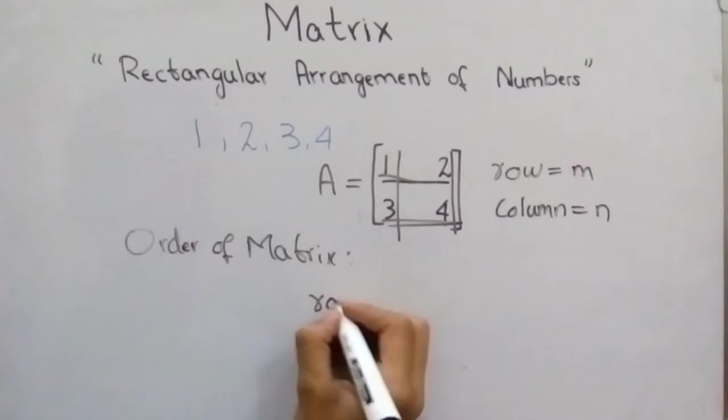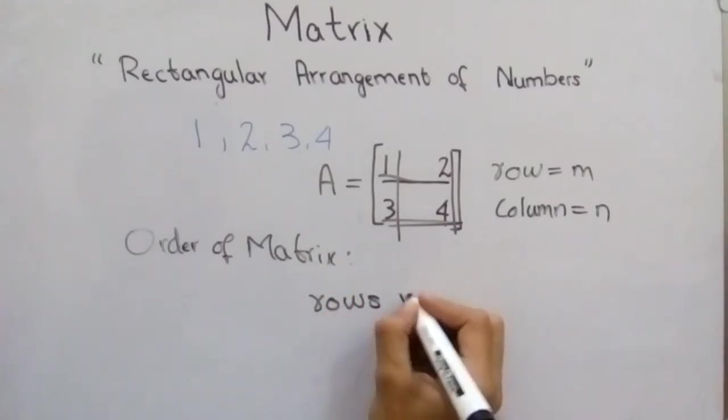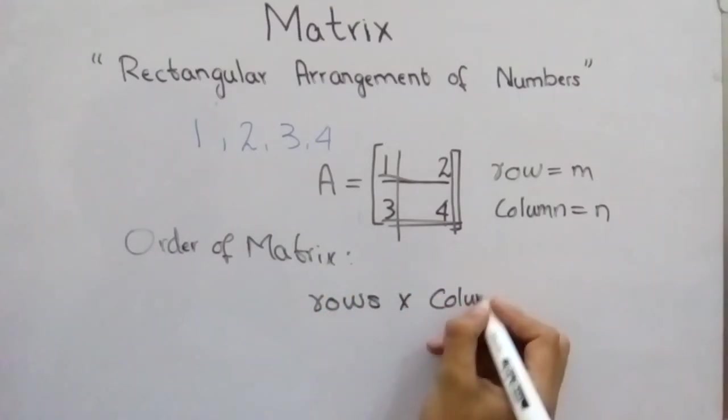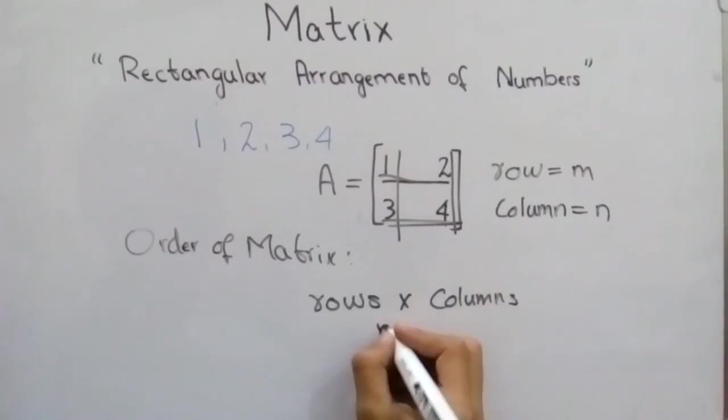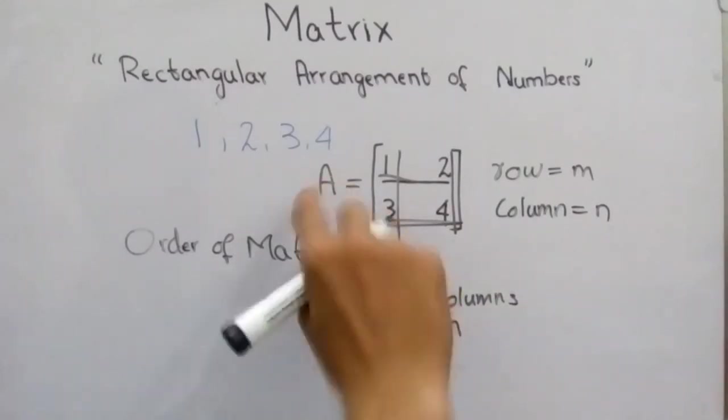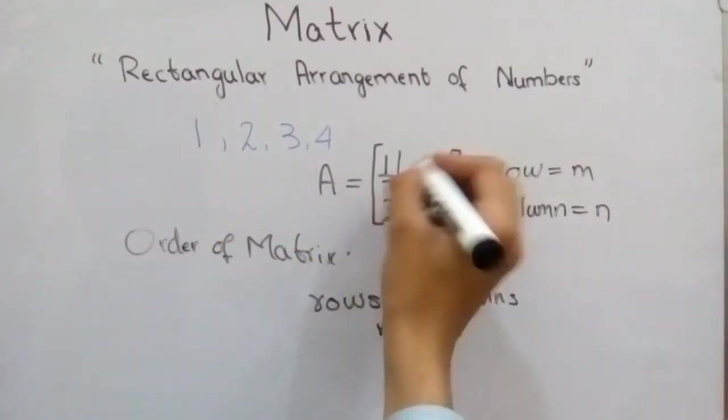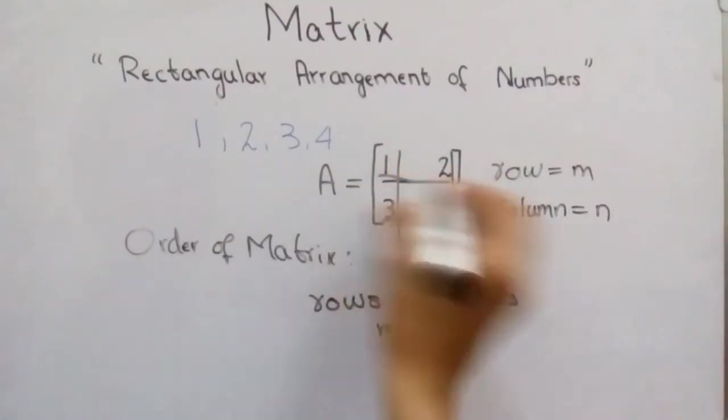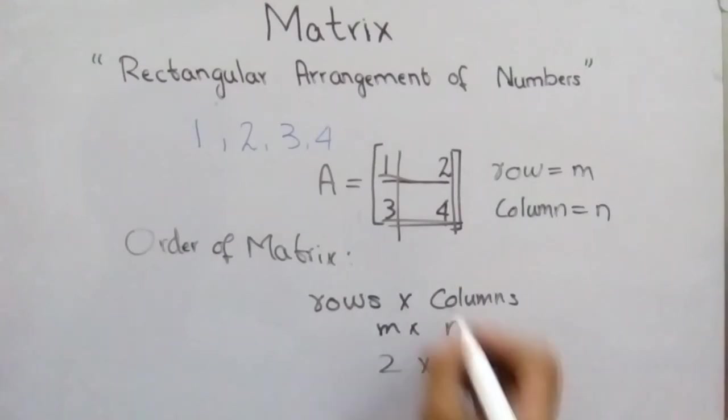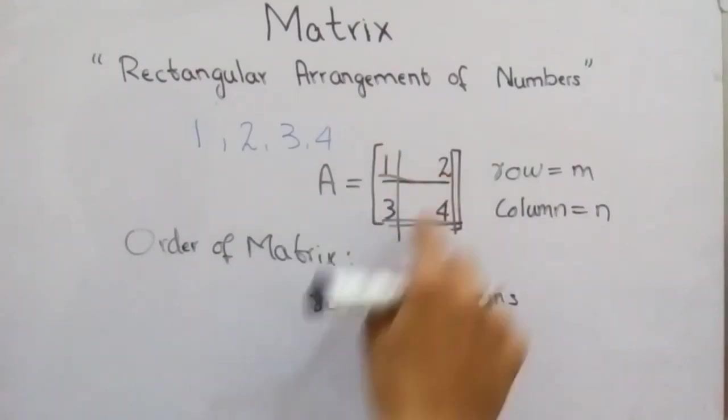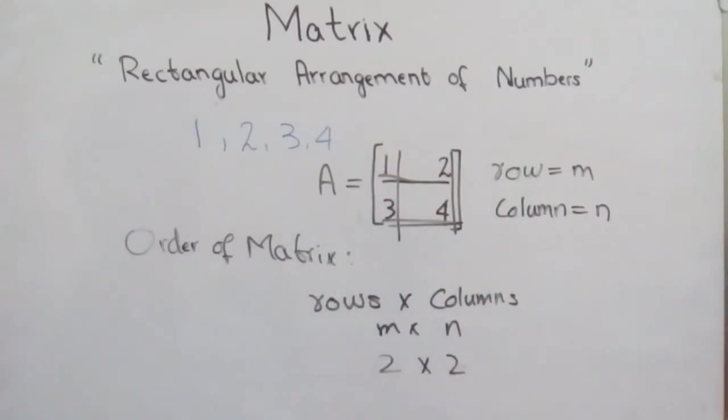What is order of a matrix? So order of a matrix is equal to rows multiply columns, m multiply n. In this matrix, we have rows equal to 2, 1 and 2. And columns is equal to 1 and 2, so 2 multiply 2.